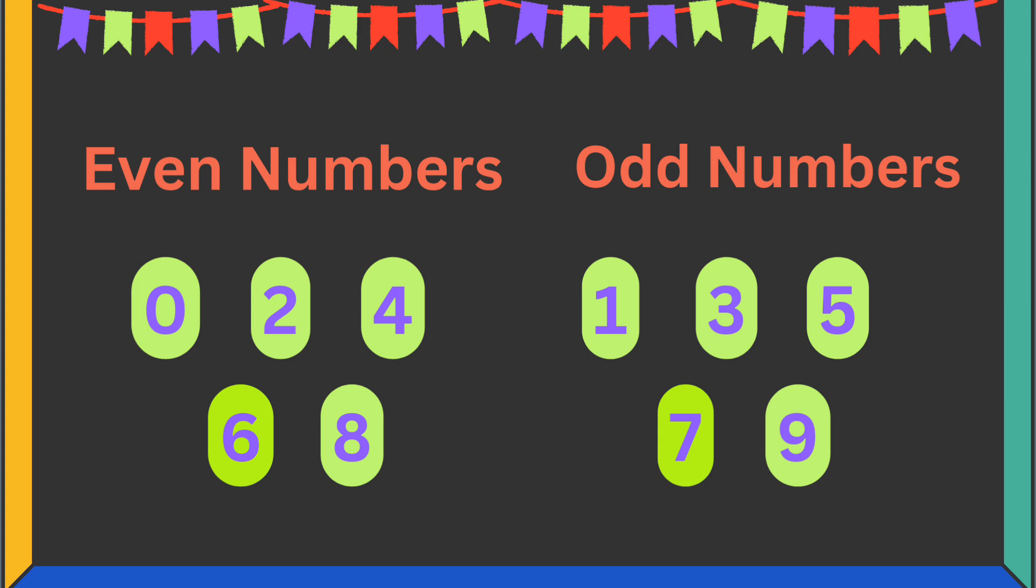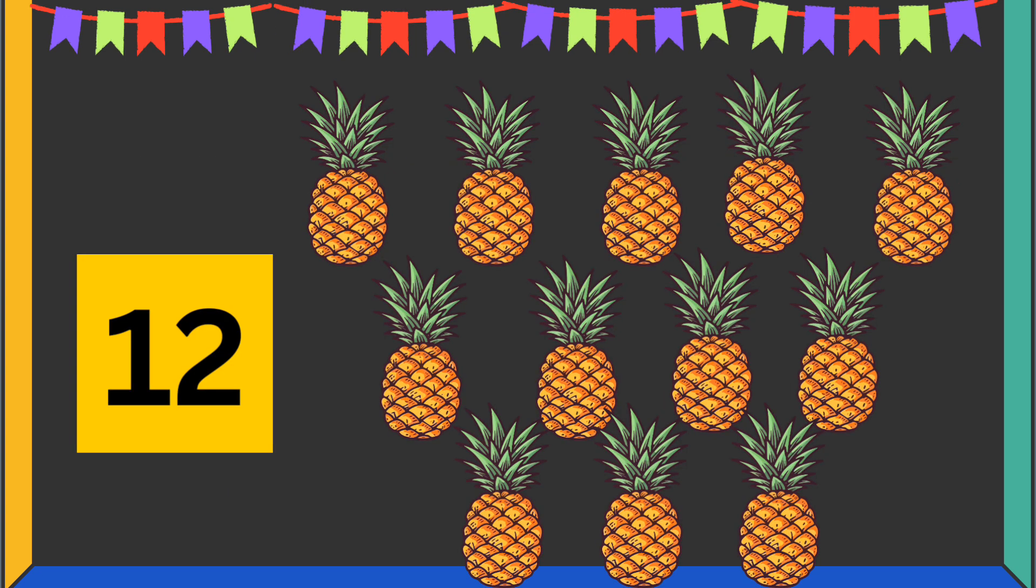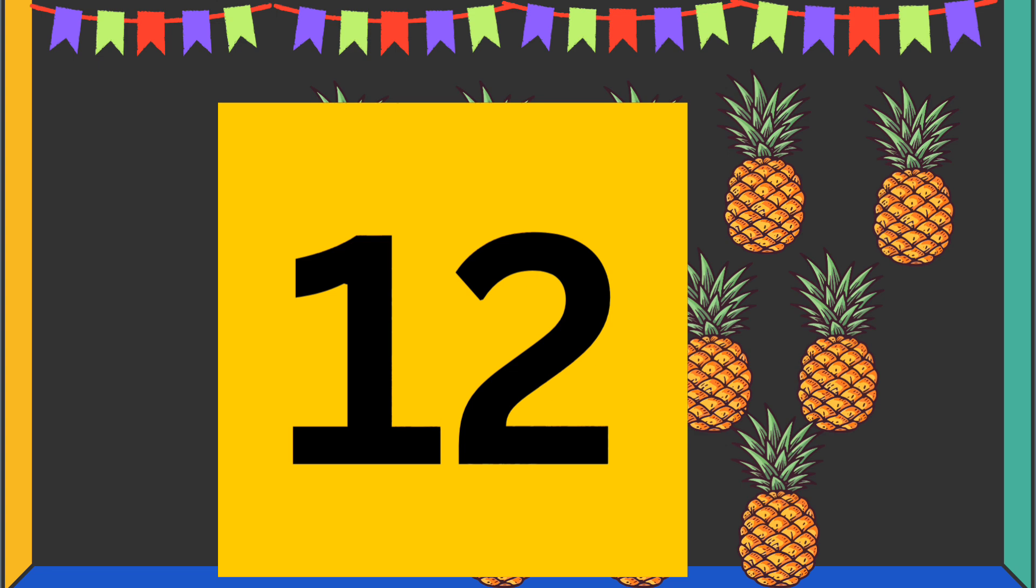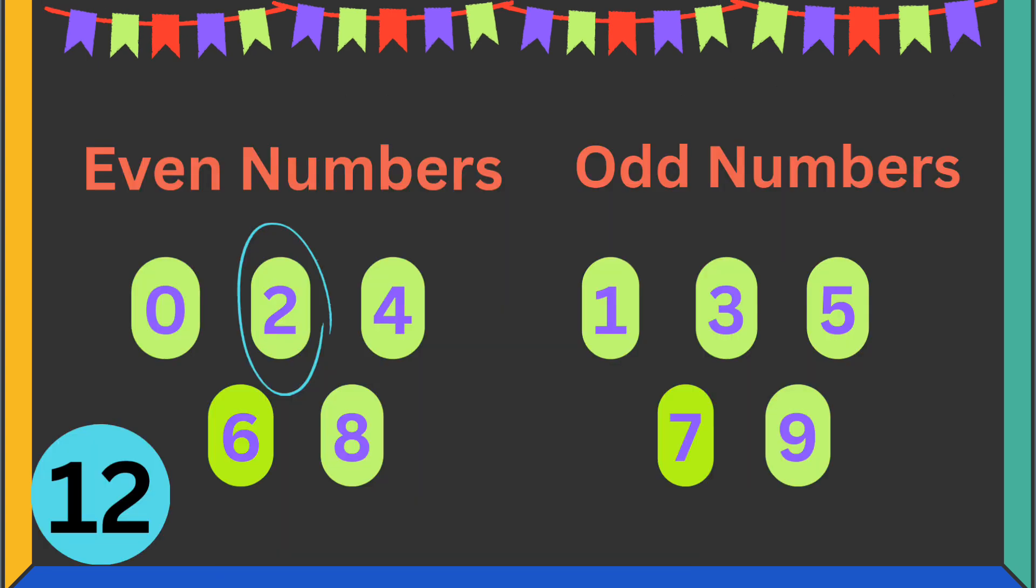Let's practice! There are 12 pineapples. Can we find out if 12 is an even or odd number? Of course! The last digit in 12 is 2. Remember our trick: 2 is an even number, which makes 12 an even number as well.